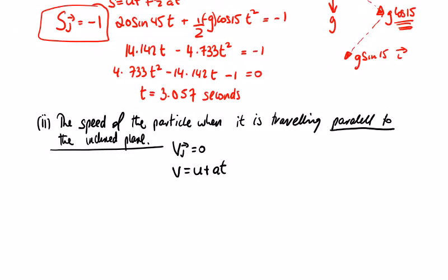We should be able to get a time which will enable us to get the time taken to get to that point. And then we'll use that time with the velocity of I to get the speed. When traveling parallel, the speed will be the speed in the I direction.